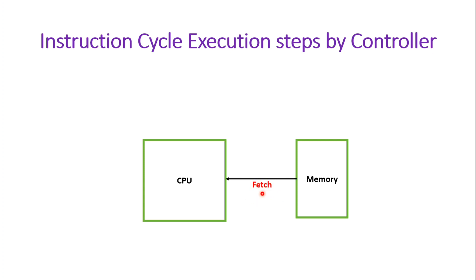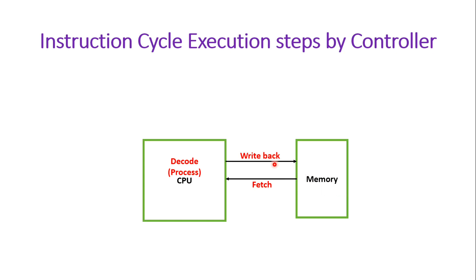First, the microcontroller fetches the instruction from the memory. Then in the decode stage it comes to know exactly what kind of operation it needs to perform — for example, arithmetic or logical operation. After that, the microcontroller performs the operation on the operand and gives the result, which is written back into the memory or into the register based on which instruction was used. This is the instruction cycle execution step by the microcontroller.